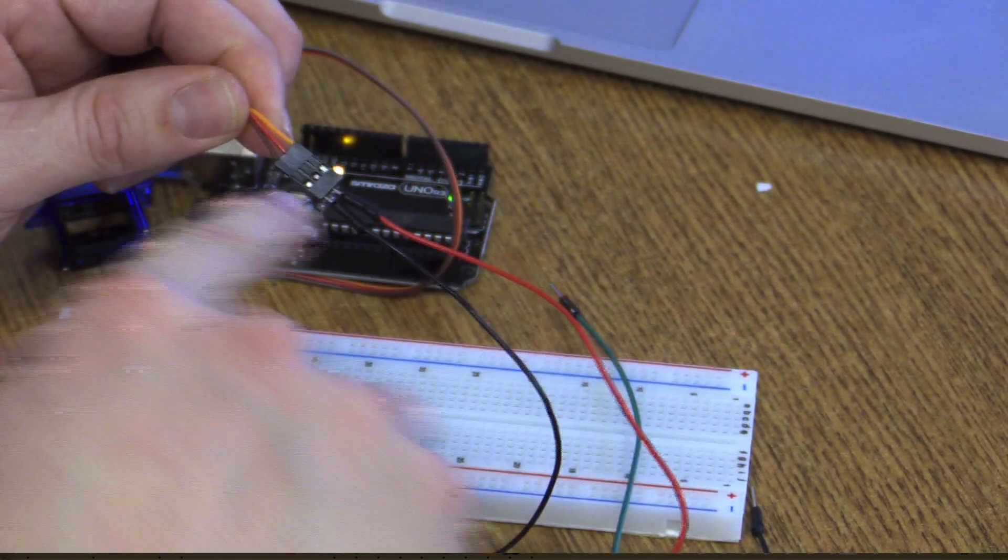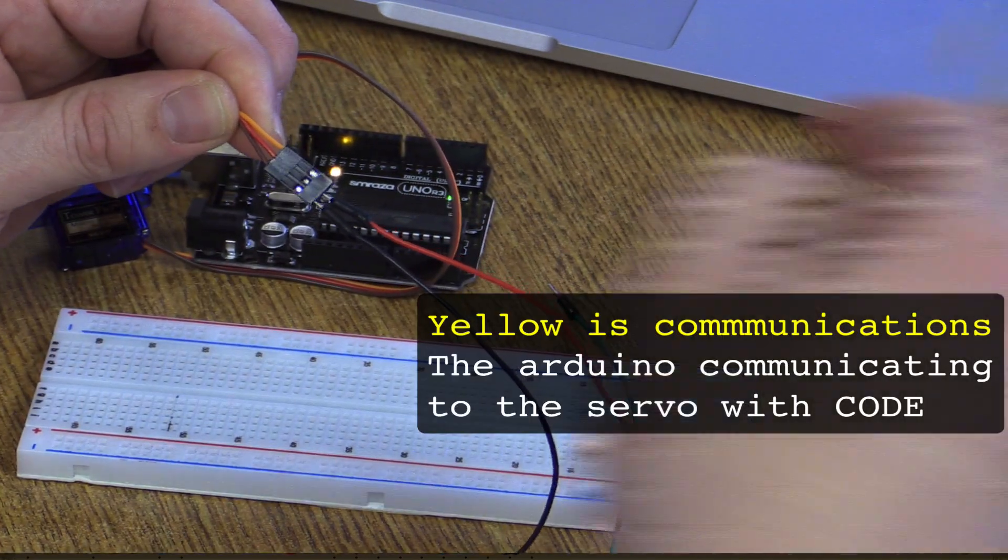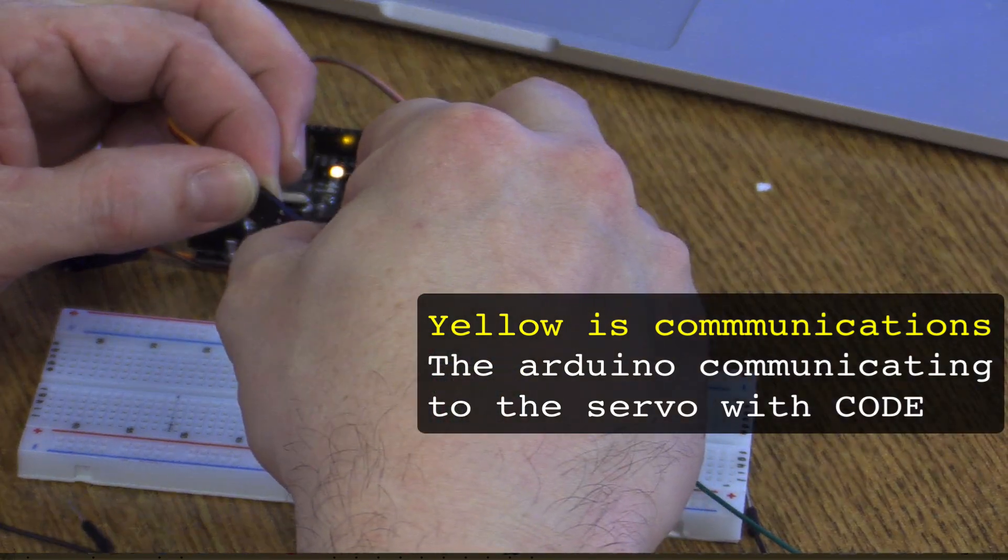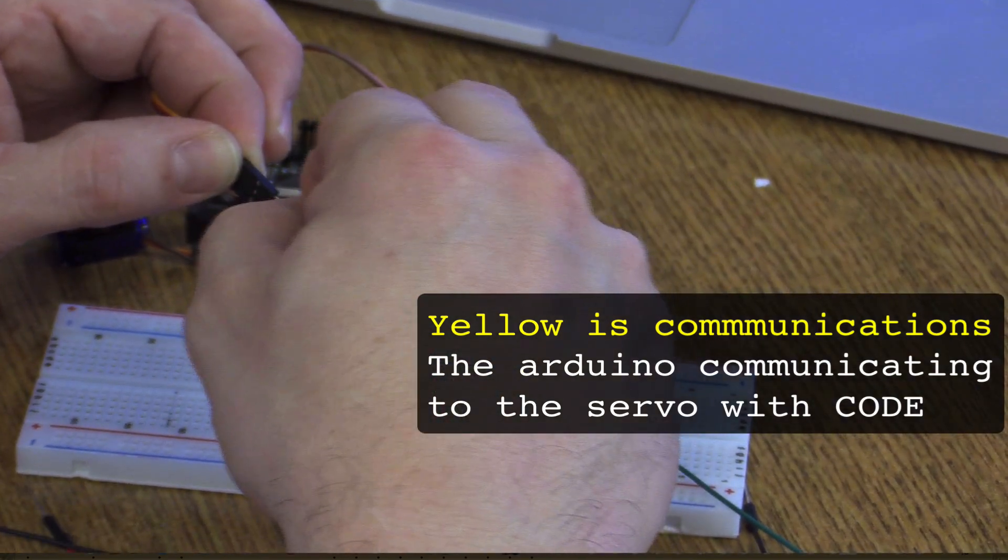And then the last one, the orangey one, is the thing that allows us, it's the command one, it's the communications one, it's the one that allows us to tell the servo what to do. So we're going to plug that, the yellow one in there.